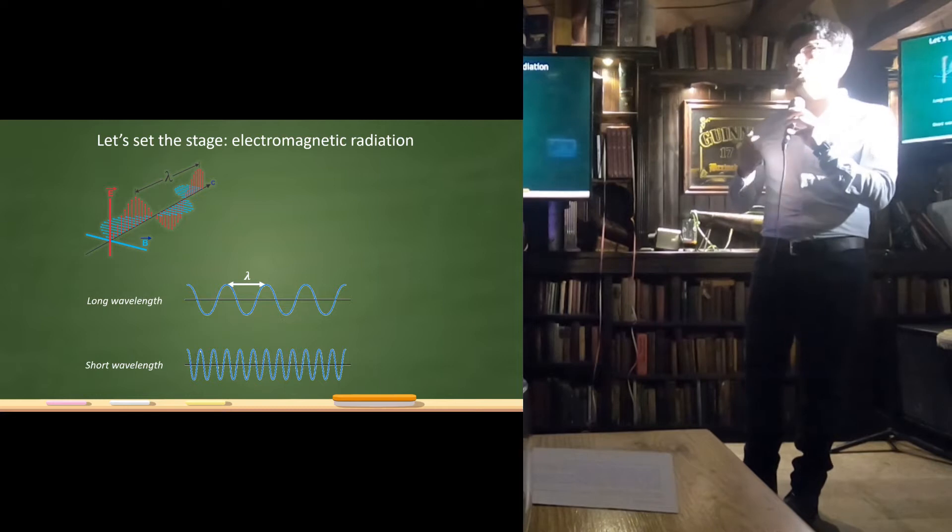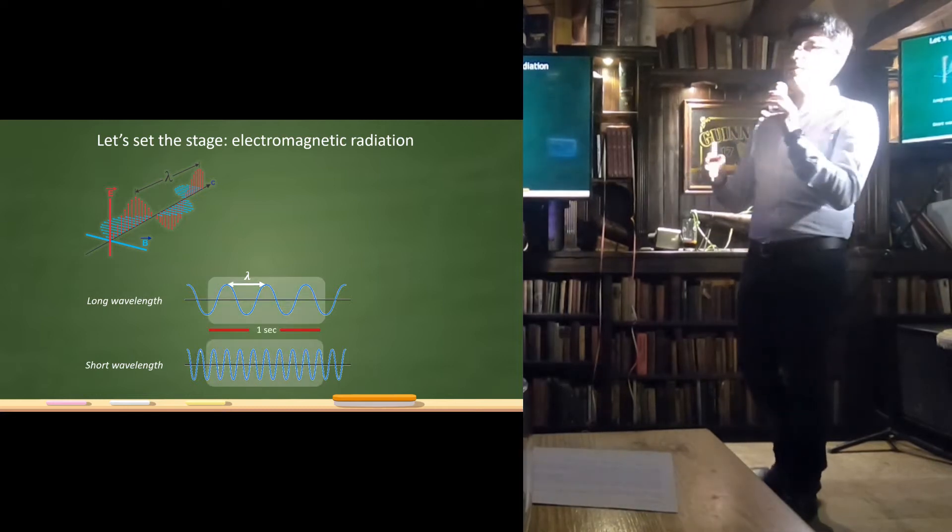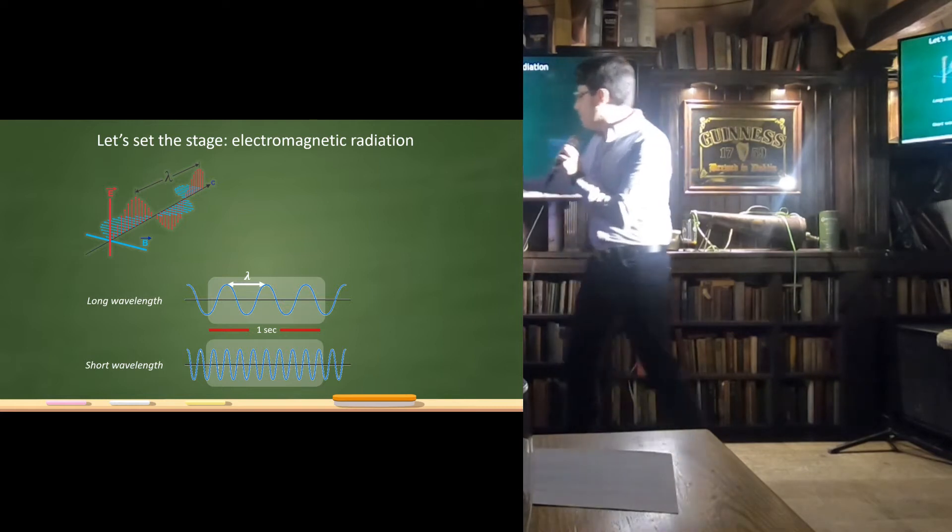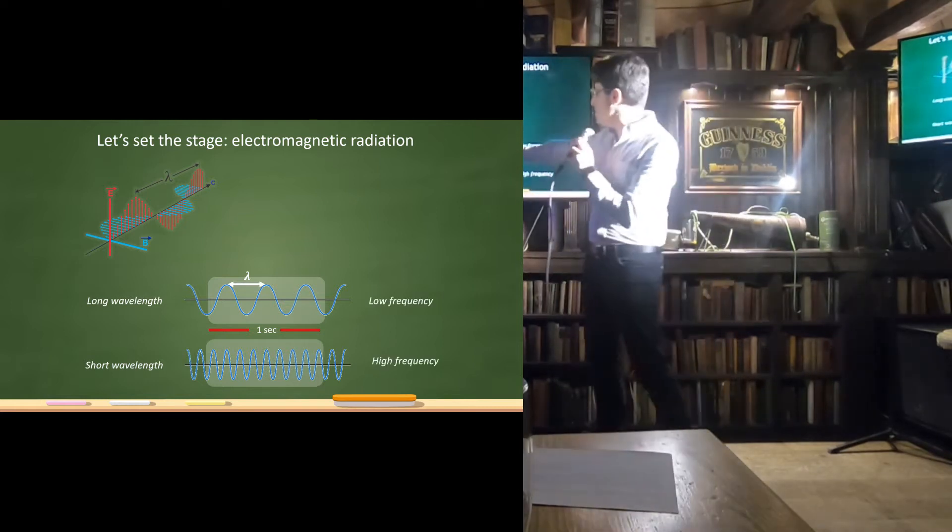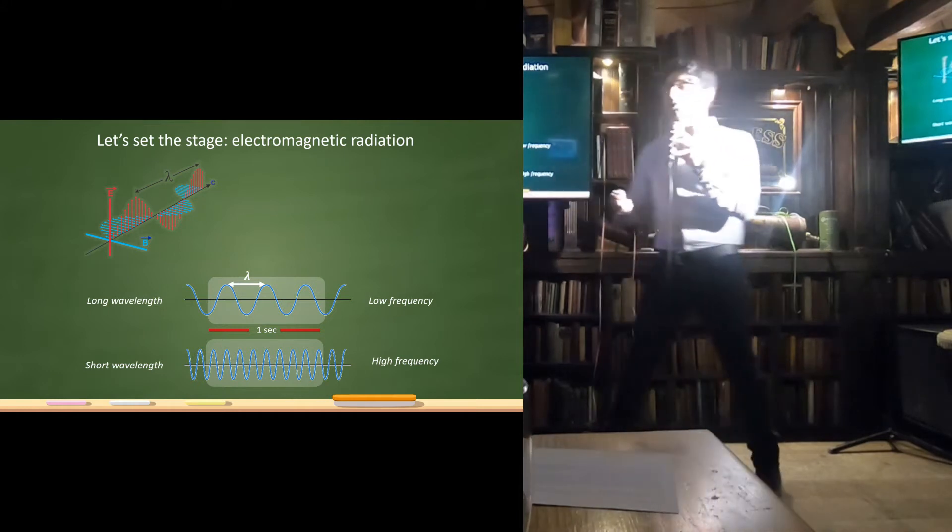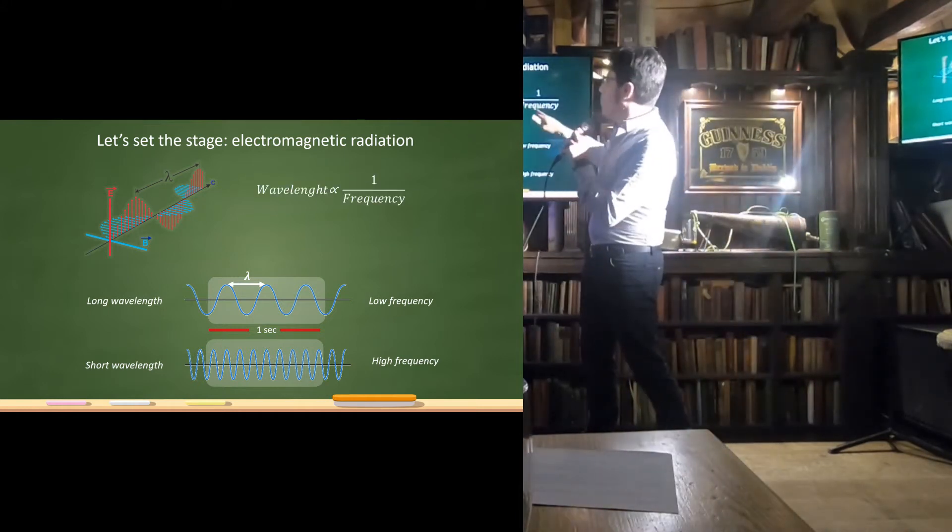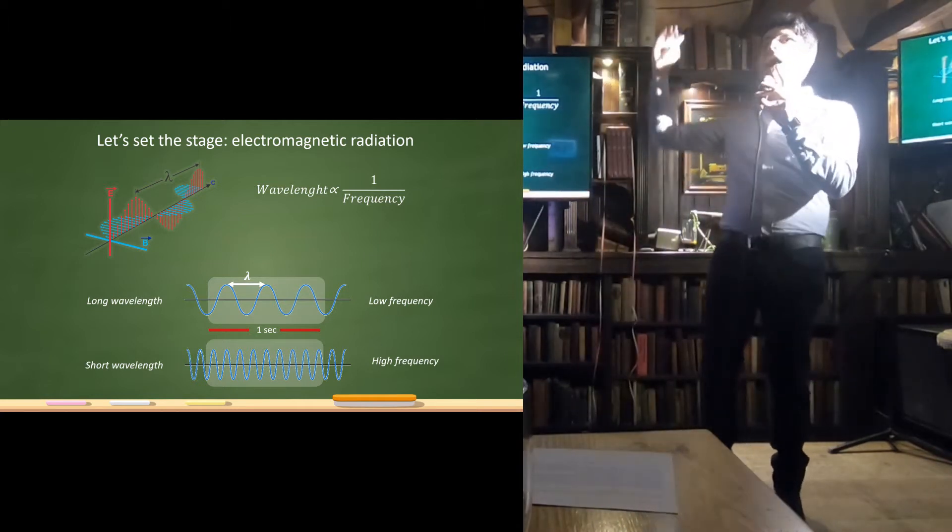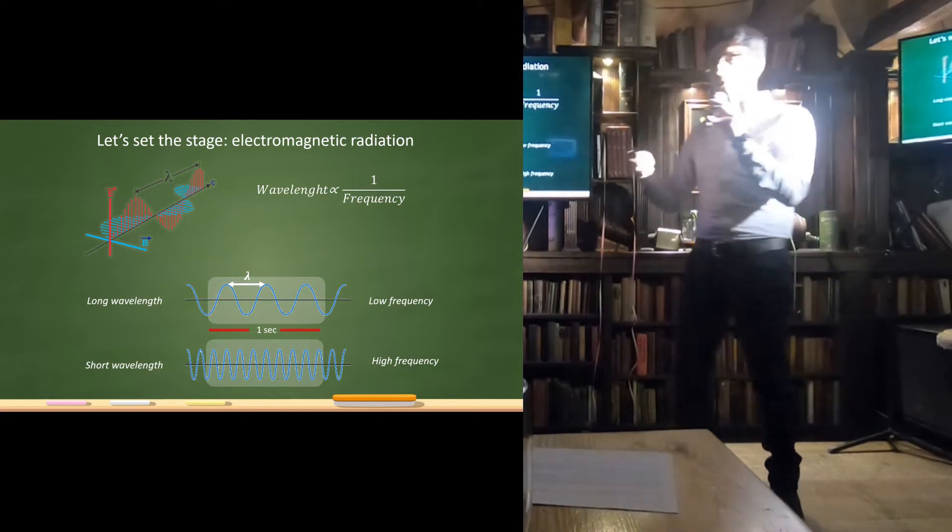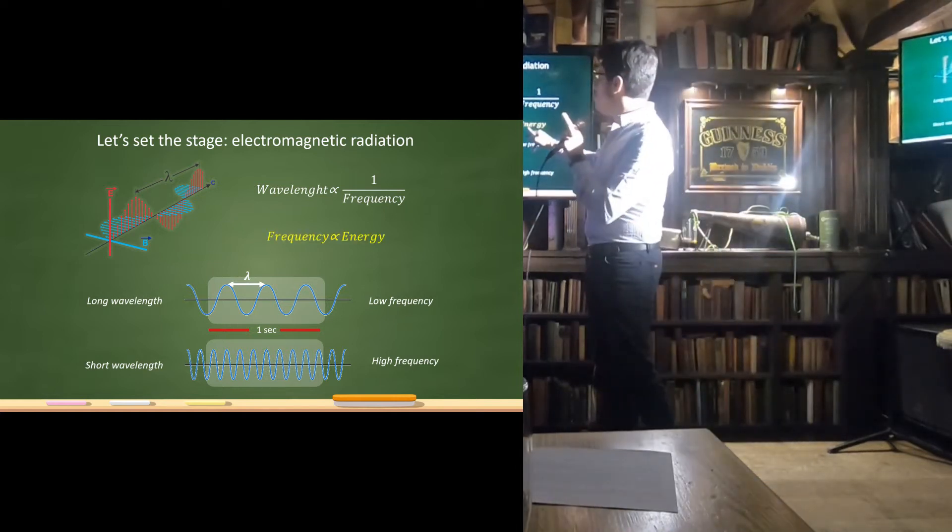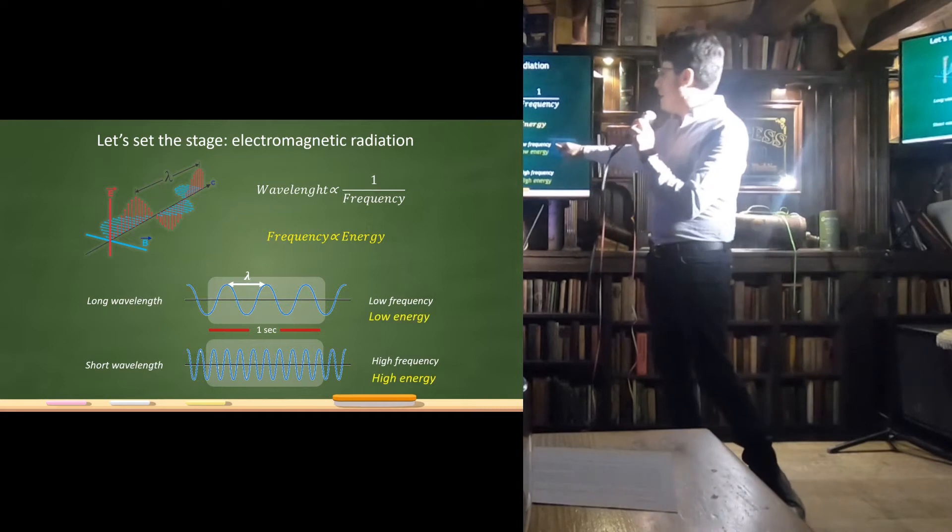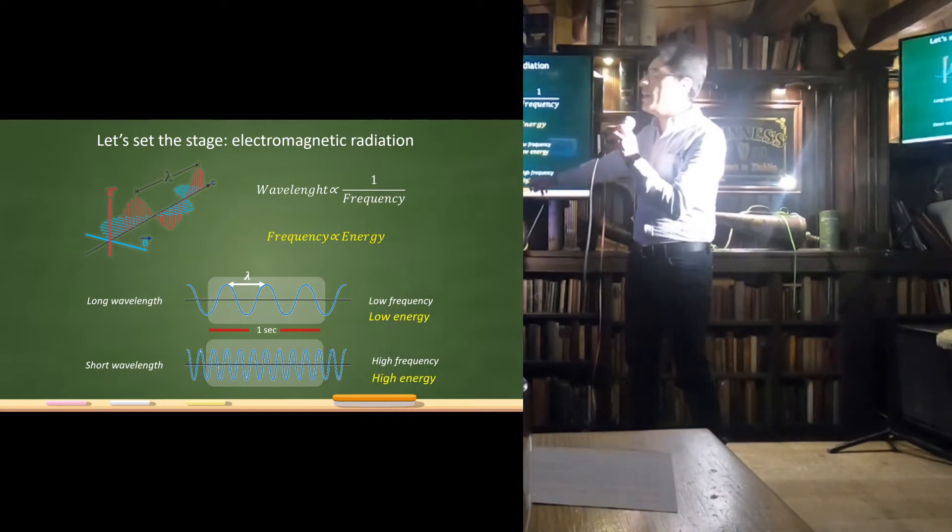The other concept is the frequency. You also heard about this for sure. So, frequency is defined as the number of peaks in the interval, in the time range. So, in this case, we have, for example, three peaks here, and here we have more than three. That means here we have low frequency, and here we have high frequency. What I'm telling you is that the wavelengths and the frequency are inversely proportional. That means a long wavelength correspond to low frequency, and a short wavelength correspond to high frequency. This is very important to understand, and the last thing is this equation here. Frequency is proportional to the energy. That means the lower the frequency, the lower the energy. The higher the frequency, the higher the energy. All right? That's it.